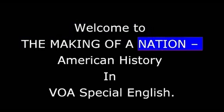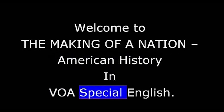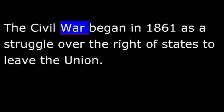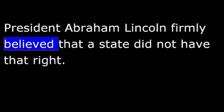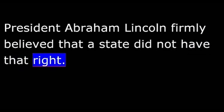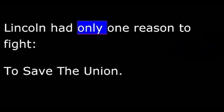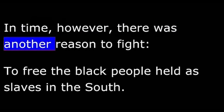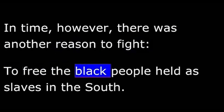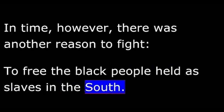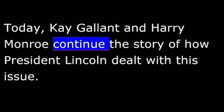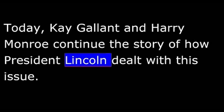Welcome to The Making of a Nation, American History in VOA Special English. The Civil War began in 1861 as a struggle over the right of states to leave the Union. President Abraham Lincoln firmly believed that a state did not have that right, and he declared war on the southern states that tried to leave. Lincoln had only one reason to fight: to save the Union. In time, however, there was another reason to fight — to free the black people held as slaves in the South. Today, Kay Gallant and Harry Monroe continue the story of how President Lincoln dealt with this issue.